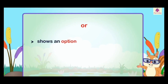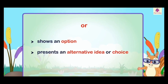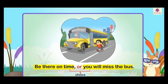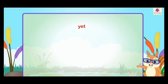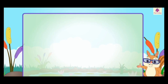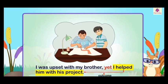Or shows an option — it presents an alternative idea or choice. For example: 'Be there on time, or you will miss the bus.' Yet presents an outcome or contrast. For example: 'I was upset with my brother, yet I helped him.' Here 'yet' is presenting the outcome.